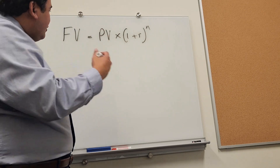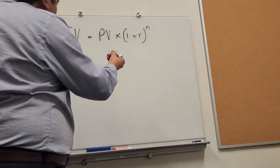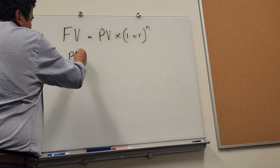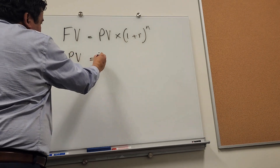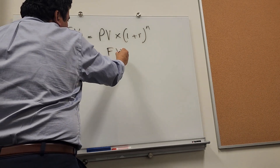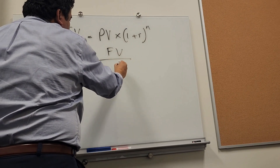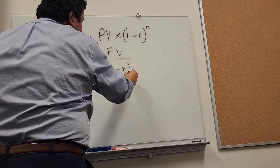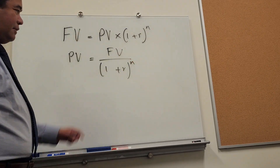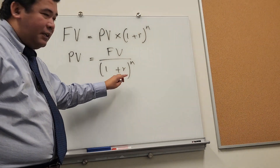You can rearrange it to calculate the present value. In this case, present value equals future value divided by 1 plus r raised to the n power. Once again, this r has to be constant.